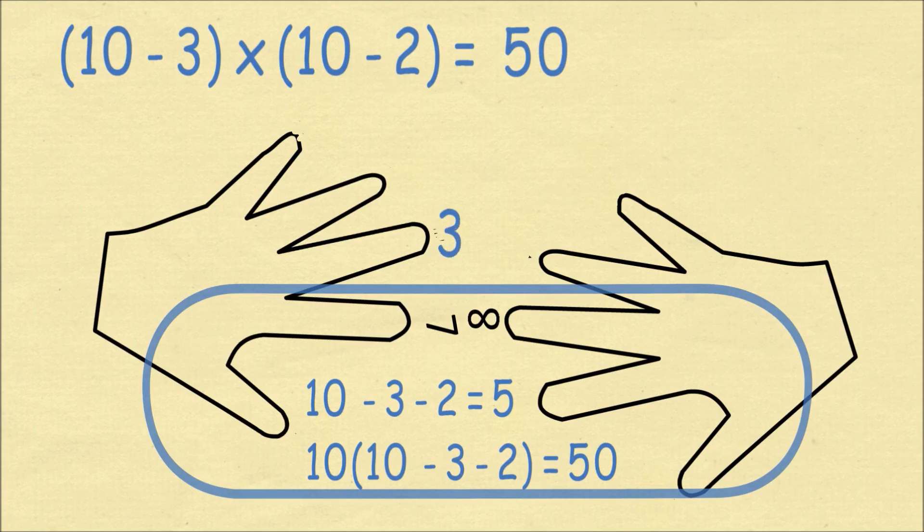Now we count the number of fingers which are above the touching fingers. There's 3 on the left and 2 on the right. We then multiply these to get 6, and that once again gives us 56. So now you can see why the process works in general.